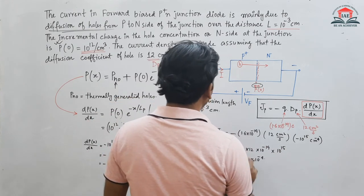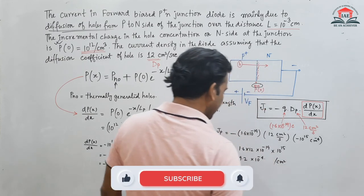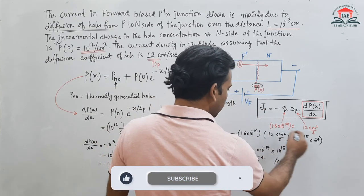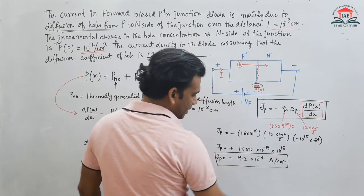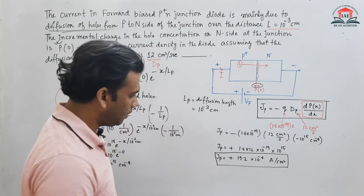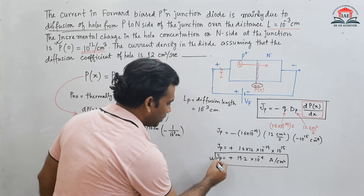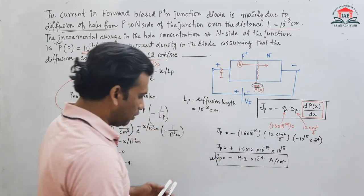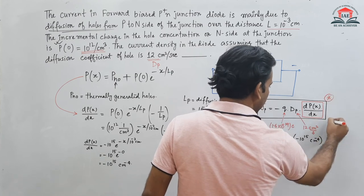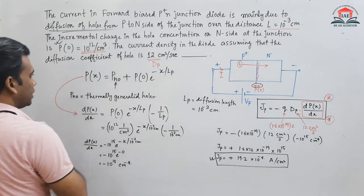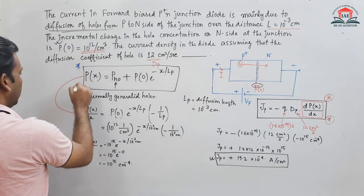The unit of Jp is ampere per centimeter square. This can also be converted to milliampere. So the value of Jp = 19.2 × 10^-4 A/cm². To solve this numerical, two formulas are key: the Jp diffusion current formula (Jp = q·Dp·dP/dx) and the hole diffusion profile equation P(x) = Pn0 + P0·e^(-x/Lp).